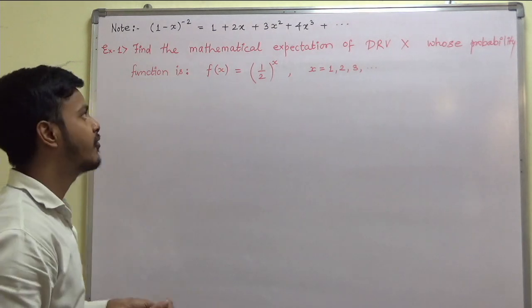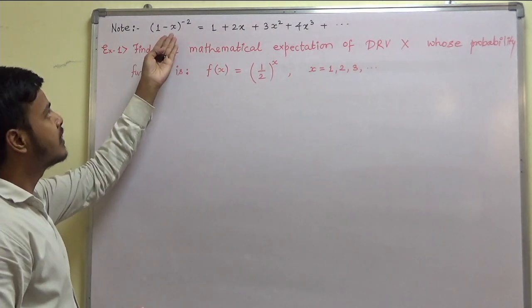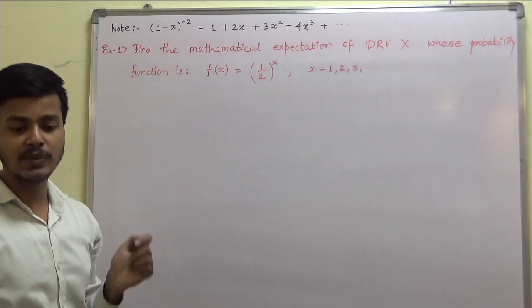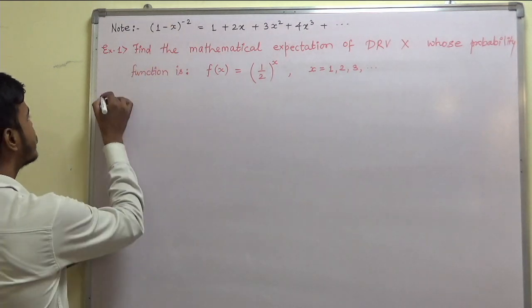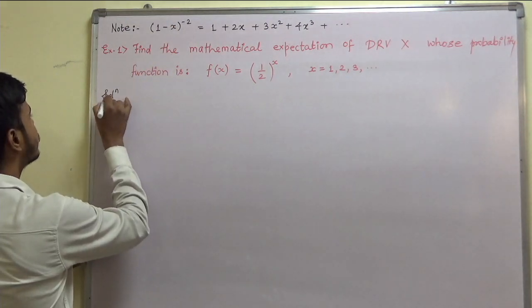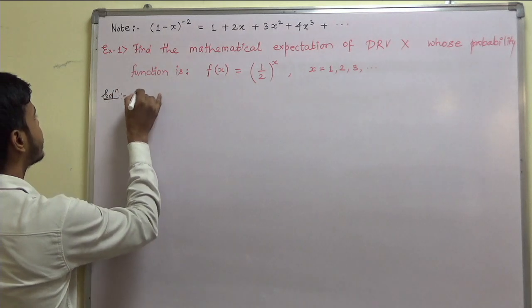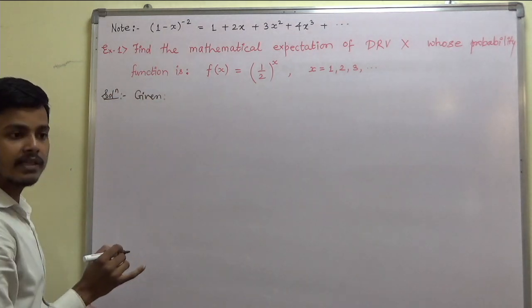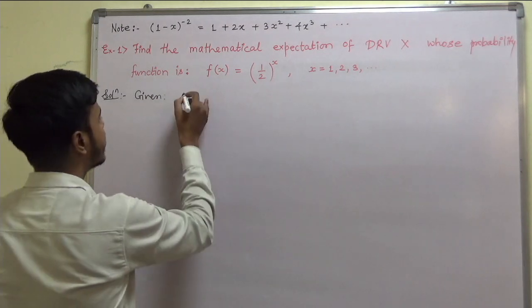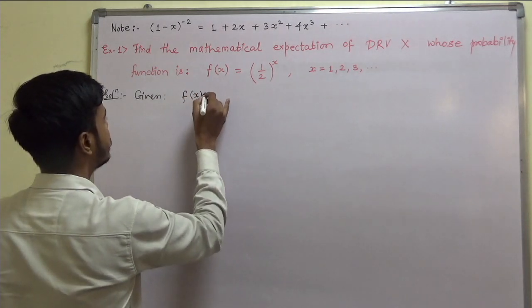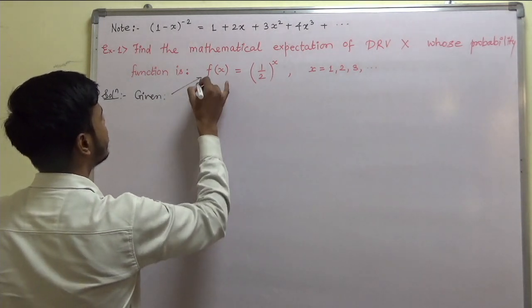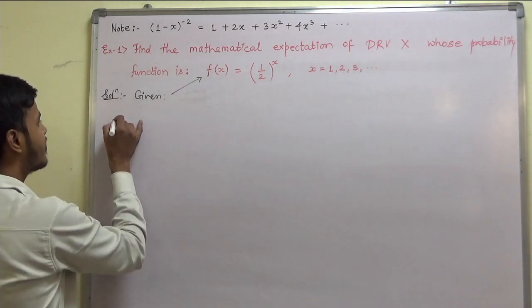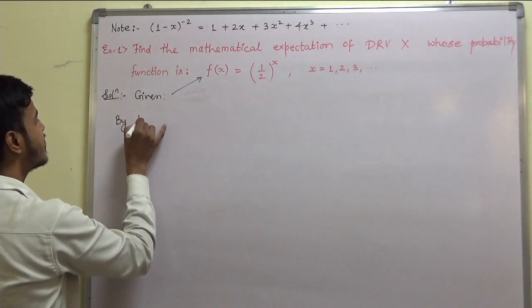For this you need to remember the result that we are going to make use of. What is given to us here? We are given that f of x is equal to a certain expression. What we have to find out? We have to find out the mathematical expectation.